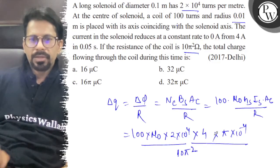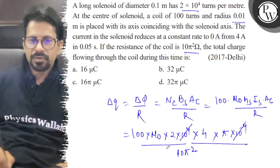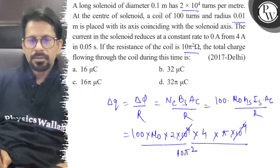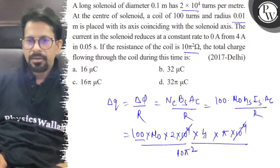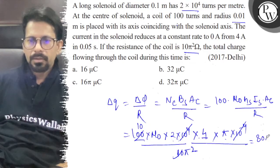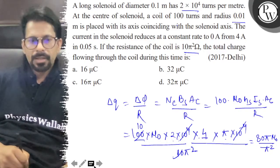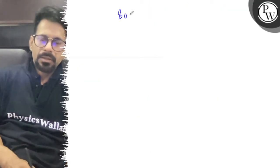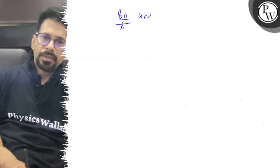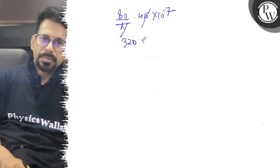Now substituting: we have 100 × 4 × 2×10⁴ × π×10⁻⁴, divided by 10π². This simplifies to 80π times μ₀ upon π². Taking it further, it's 80 upon π times 4π×10⁻⁷, giving 320×10⁻⁷.